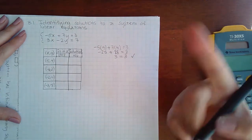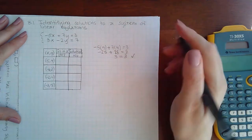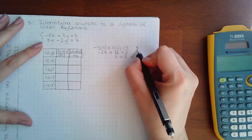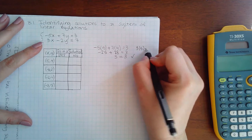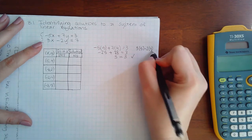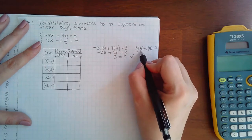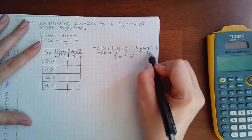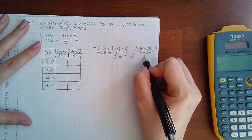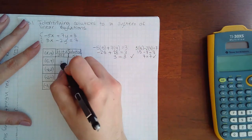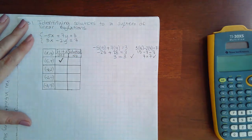So it does work in the first equation. I have to make sure that it also works in the second equation, so I'm going to do 3 times 4 minus 2 times 4 equal to 7, and I end up with 15 minus 8 equal to 7, which is 7 equal to 7. So it also works in the other equation, so I can say yes it is a solution to the entire system.